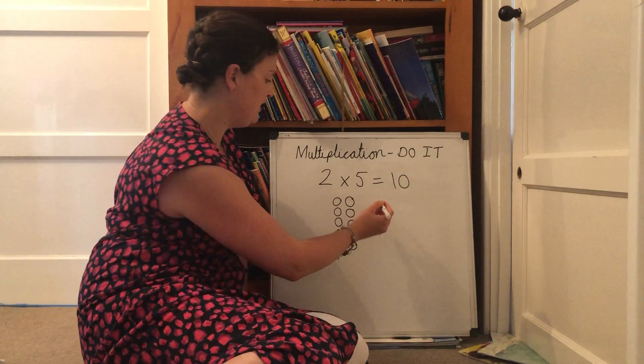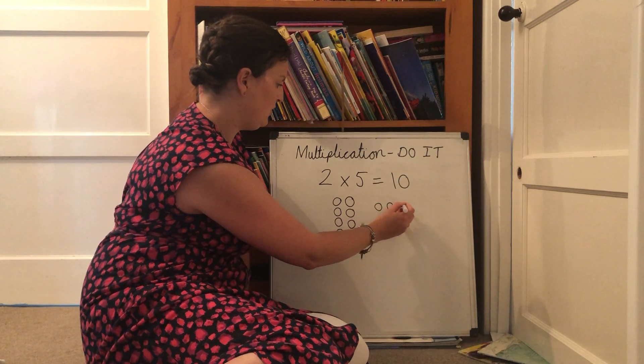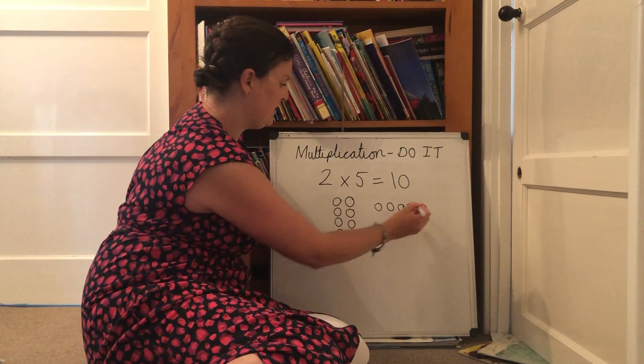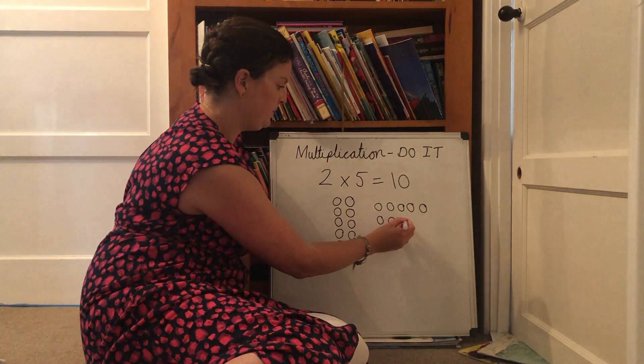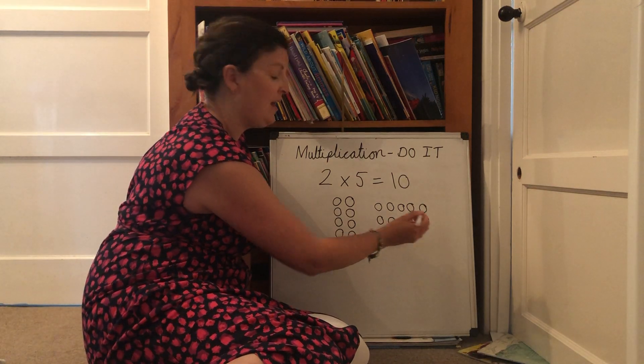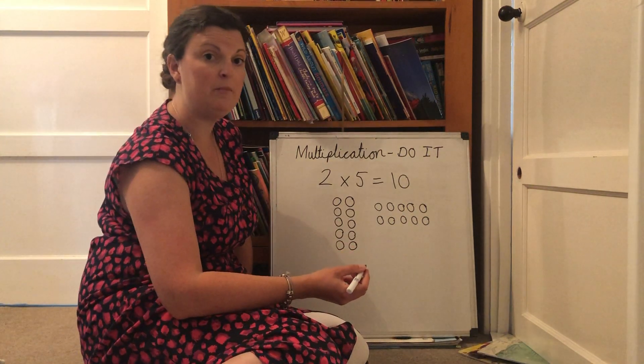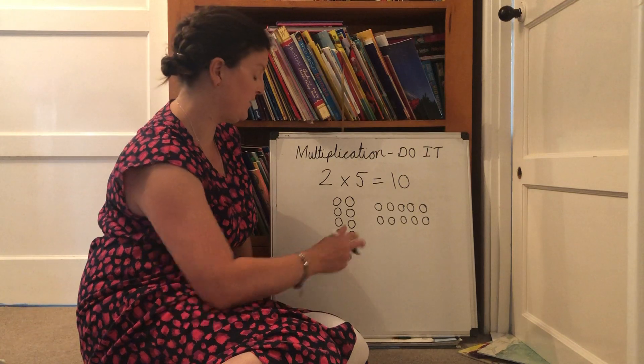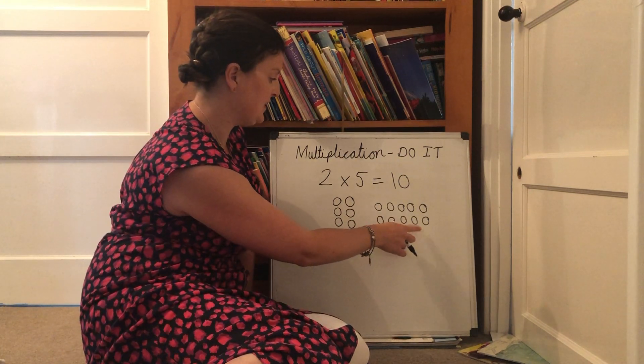If I drew my array on its side like that, that's absolutely fine because it gives me the same answer. I've still got two, four, six, eight, ten.